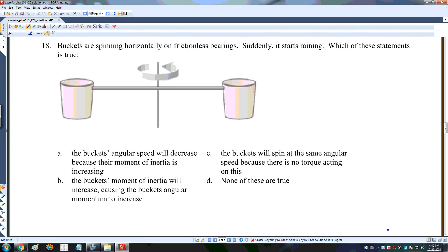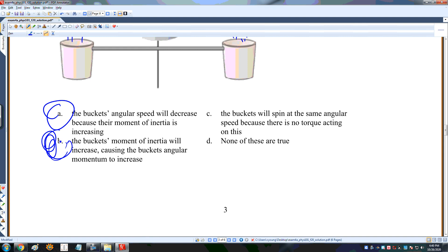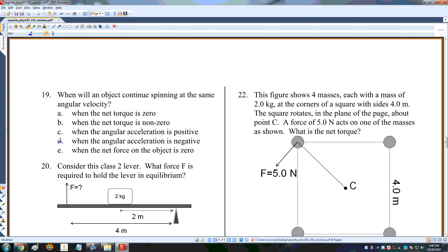Buckets are spinning horizontally. They start getting rain into the buckets. They gain mass, and when they gain mass, their moments of inertia increase. They'll actually slow down because the moment of inertia is increasing. We had a very similar question in chapter 6.